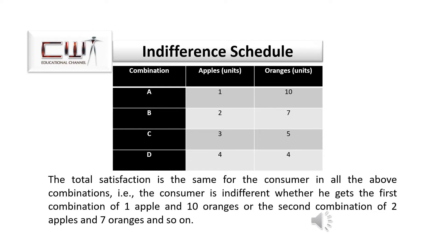An indifference schedule is a table showing various combinations of two commodities where the consumer gets the same level of satisfaction. For example, taking apples and oranges: combination A is one apple and ten oranges; combination B is two apples and seven oranges; combination C is three apples and five oranges; and combination D is four apples and four oranges. These combinations give the same level of satisfaction, so the consumer is indifferent among A, B, C, or D.